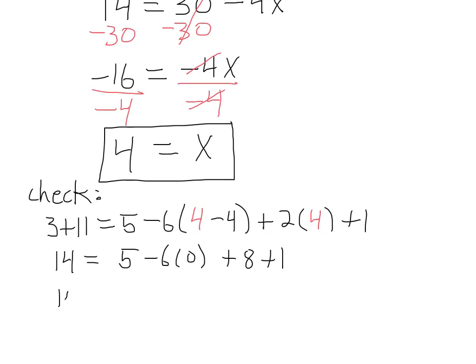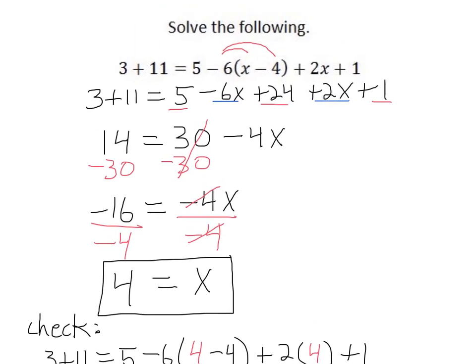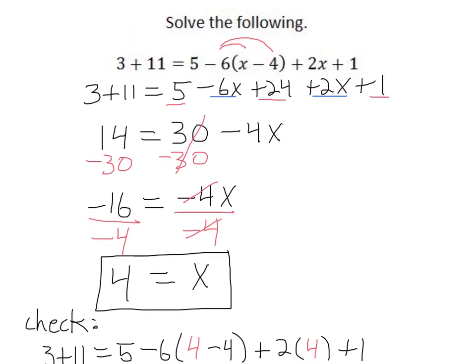And we're just about done. 14 equals 5 plus 8 plus 1. Check. So x equals 4 is the correct answer. And with all equations, you can plug that value back into the initial equation and check your answer. Make sure it's right. So this problem, we first distributed through the parentheses, then we combined like terms, then we started solving for x.